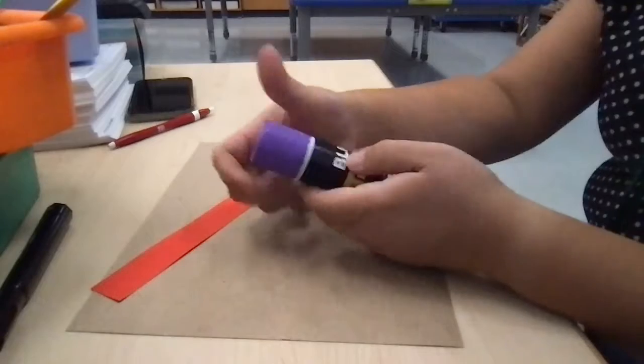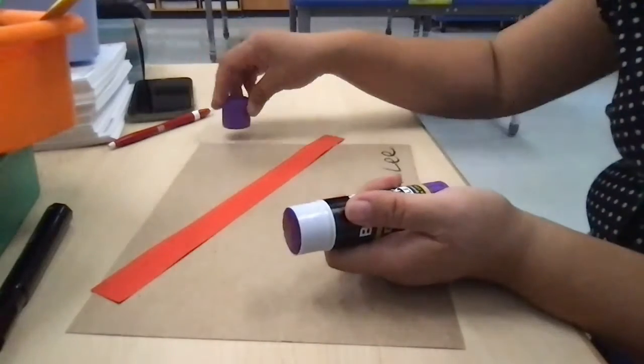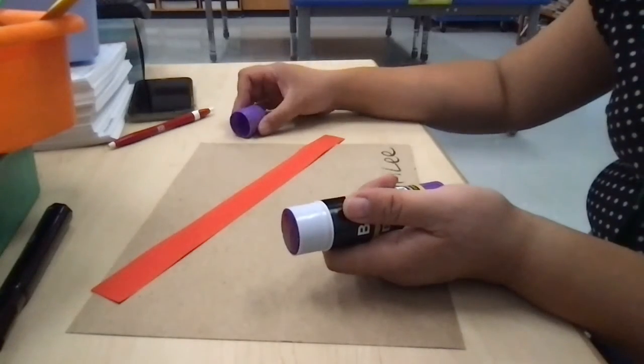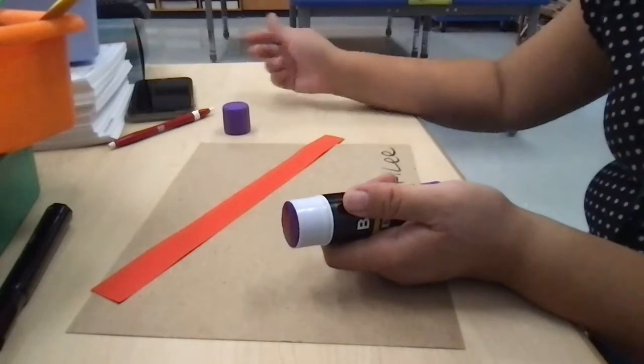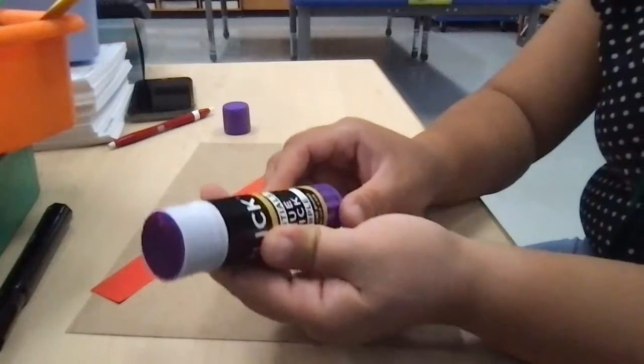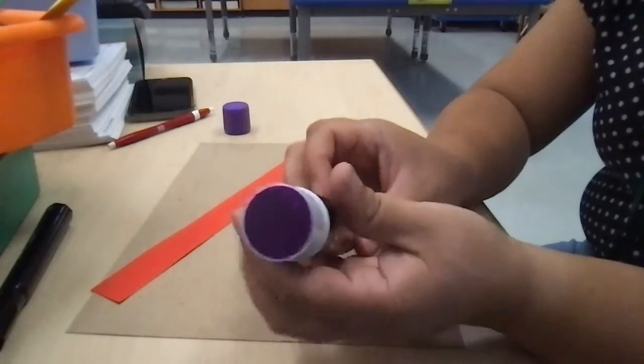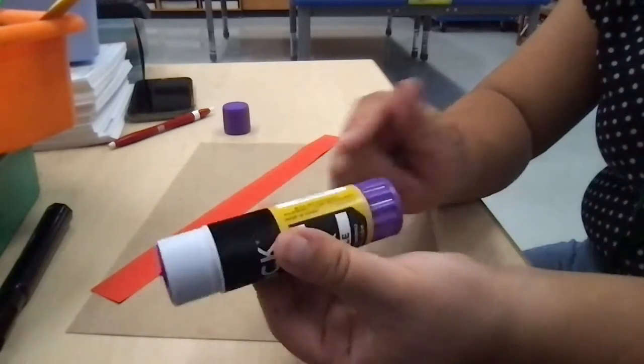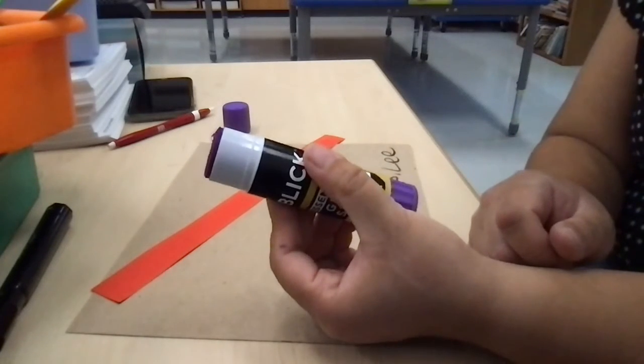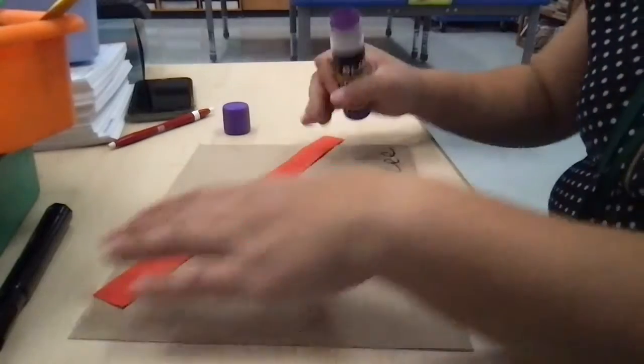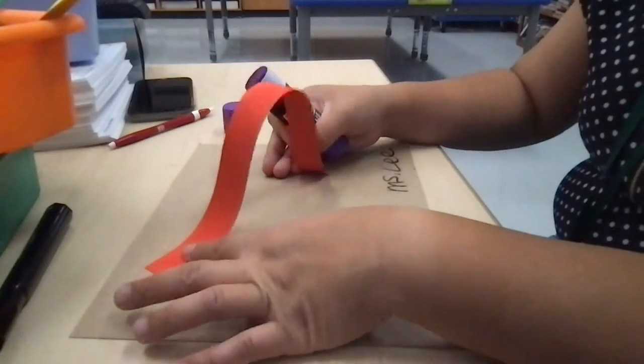When we're using our glue sticks, we take the cap off and we set it so it sits up. We don't want to set it on the side because it's going to roll around and fall off the table and get lost. When you get your special art glue stick, you'll see that it's purple at the top. There's a twisty on the bottom and you just need to twist a little bit out. You don't need a lot.